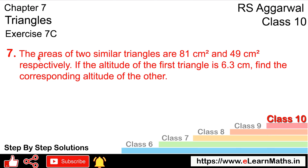Let's do question number 7 of exercise 7C. The question states: the areas of two similar triangles are 81 cm² and 49 cm² respectively. If the altitude of the first triangle is 6.3 cm, then find the corresponding altitude of the other triangle.